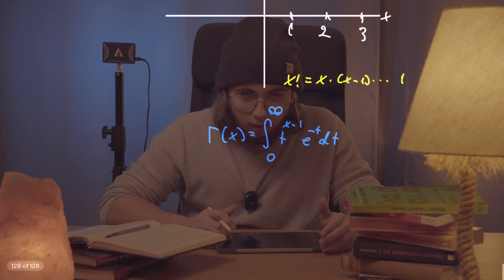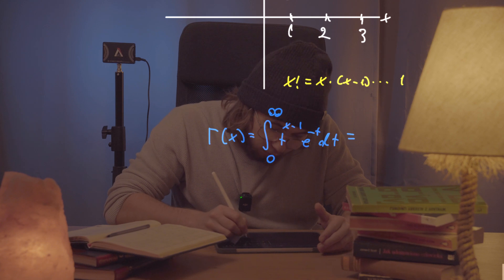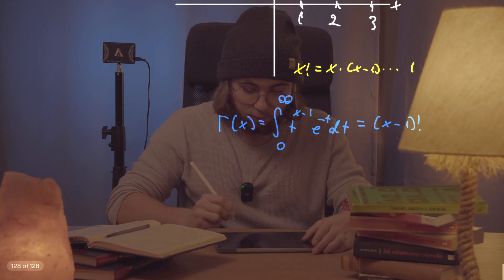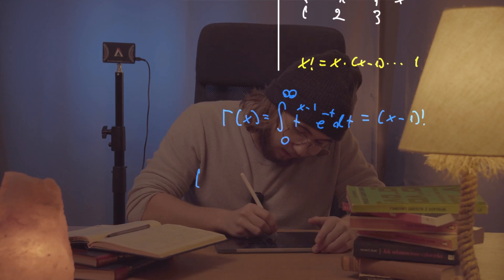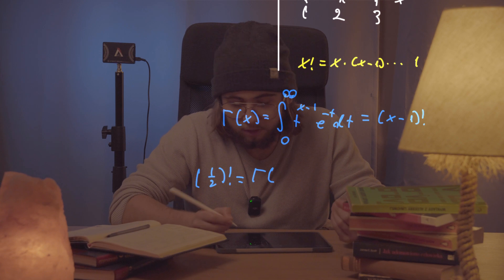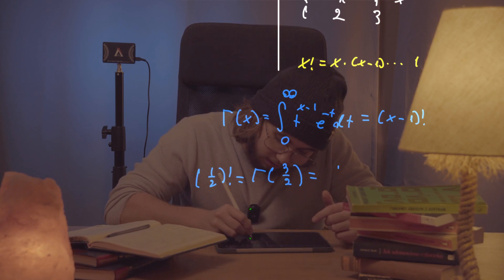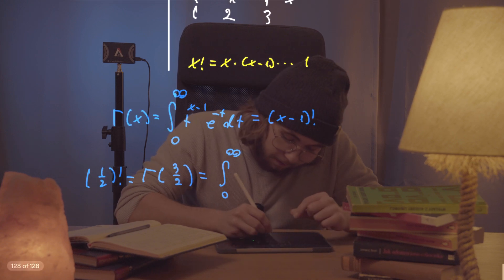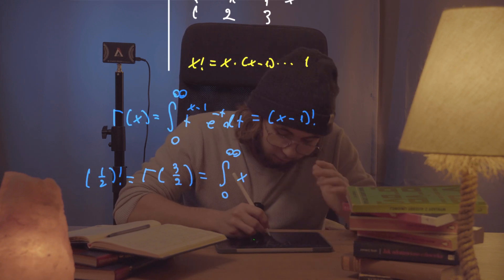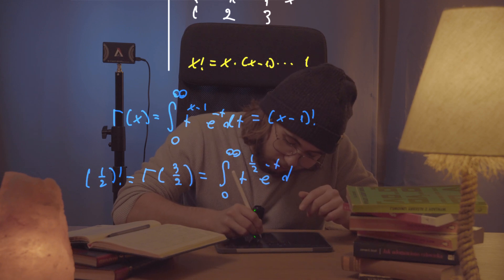I'm not going to talk about it again here. The gamma function is also equal to the (x−1) factorial. So if we want to calculate the factorial of a half, we want to calculate the gamma of half plus one, which is 3 over 2. That's just the integral from zero to infinity of t to the power of one half multiplied by e to the power of negative t, dt.